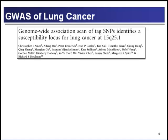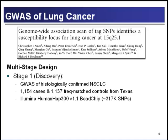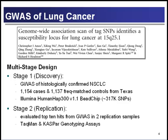In 2009, Chris Amos reported results from a GWAS of lung cancer in Nature Genetics. This was a multi-stage study design typical of genome-wide association studies. In the first stage — the discovery stage — they genotyped roughly 1,100 cases with histologically confirmed non-squamous cell lung cancer and an equivalent number of controls, using the Illumina Human HapMap bead chip which interrogates roughly 317,000 SNPs across the entire human genome. They compared genotypes at these 317,000 markers in cases and controls. Then in Stage 2, the replication phase, they took their top statistical hits and genotyped those SNPs in two additional study populations.